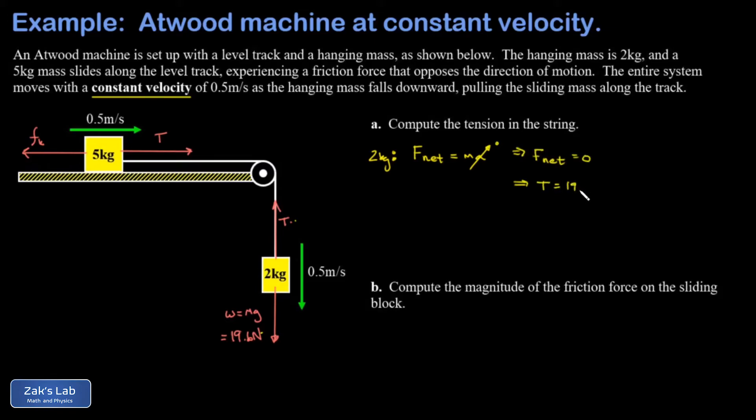In part B, we're asked to compute the magnitude of the friction force on the sliding block. We use the same sort of reasoning. This thing has a constant velocity, which again means the acceleration vanishes, which means the net force on this block is zero. That means the rightward and leftward forces must have exactly the same magnitudes. Our kinetic friction force must be equal to the tension in magnitude, so the kinetic friction force also has to be 19.6 newtons. And we're done.